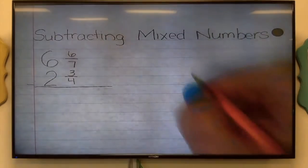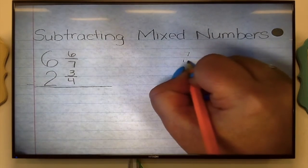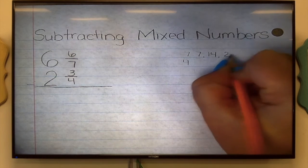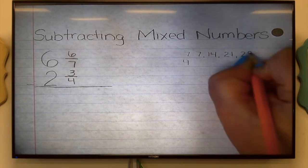Step 2, we're going to find a common denominator, just like we did when we added. So we're going to skip count by the denominators, 7 and 4, until we find a number that they have in common.